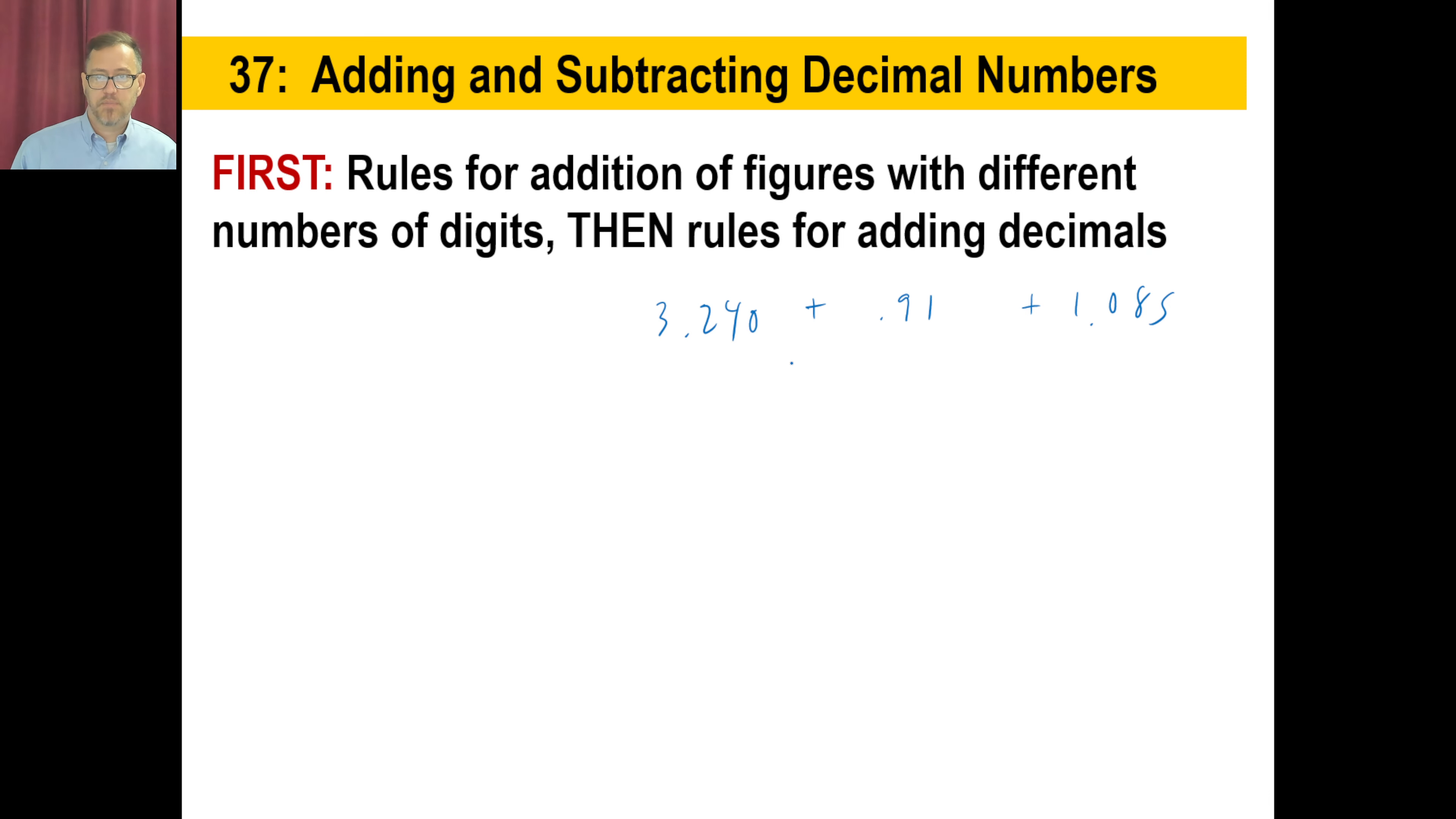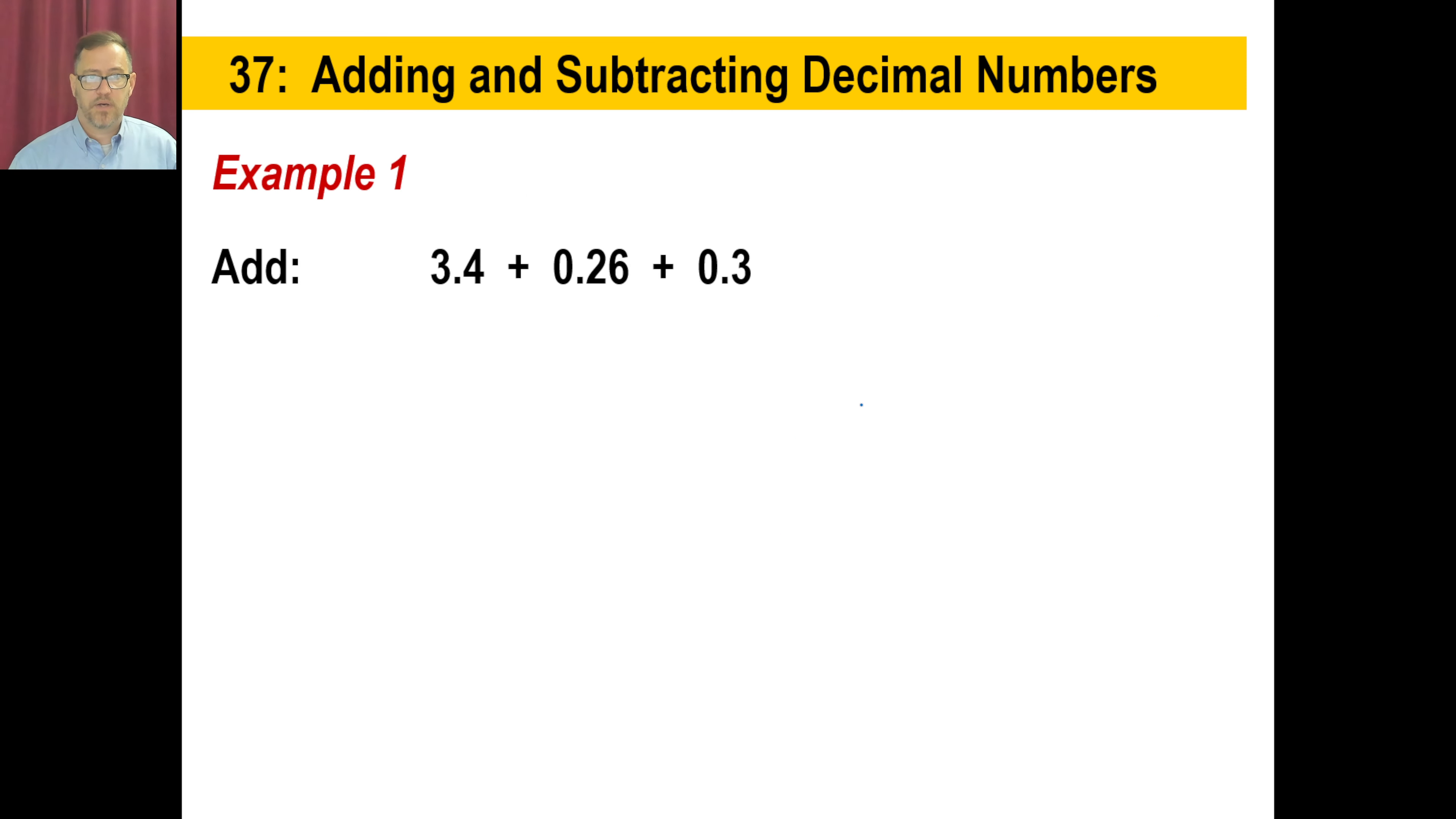Let's actually make this 240. So we can do this in any order: 3.240 and then 0.91 and then 1.085. Now you can add down here. If there isn't something right here, you can put a zero there to make it easier for yourself or whatever. So that's the only rule about adding and subtracting decimal numbers pretty much.